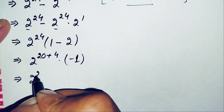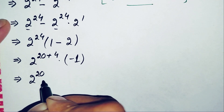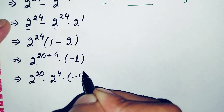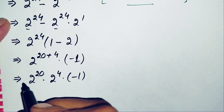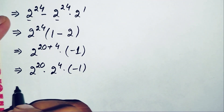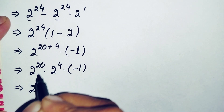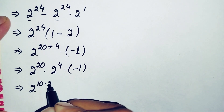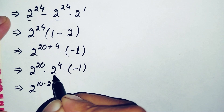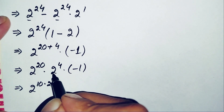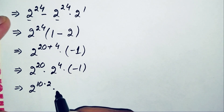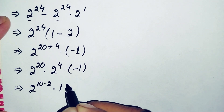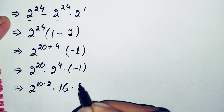So the expression becomes 2 raised to power 20 times 2 raised to power 4 times negative 1. The value of 2 raised to power 4 is: 2×2=4, 4×2=8, 8×2=16. So 2 raised to power 4 equals 16. Next, we rewrite 2 raised to power 20 as 2 raised to power (10 times 2).